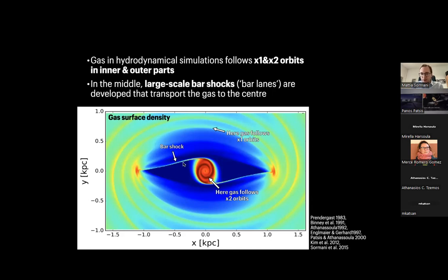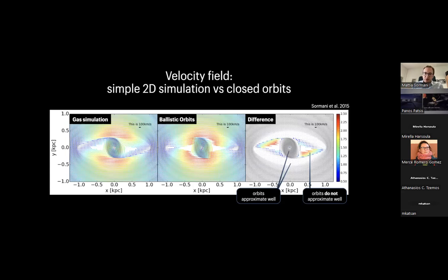In the middle, there are essentially no available orbits for the gas because the x1 orbits become self-intersecting. The gas flow develops a large-scale shock — called a bar shock — which acts almost like a river transporting gas from the disk towards the ring in the center. This is also clear in the velocity field: the difference between the gas simulation velocities and the ballistic closed orbit velocities is almost zero in the outer and inner parts, but large in the middle.